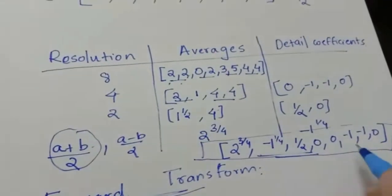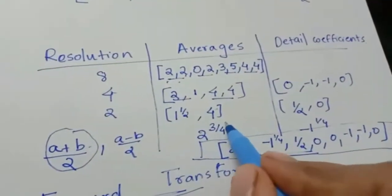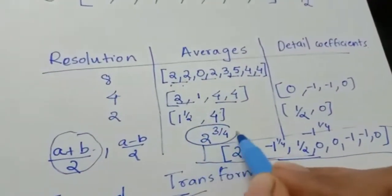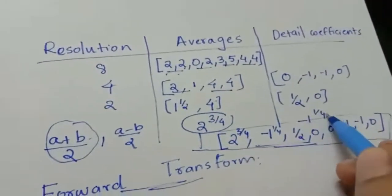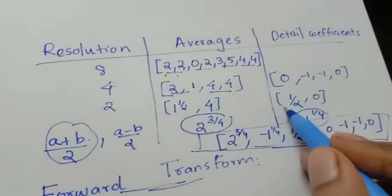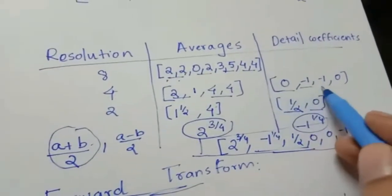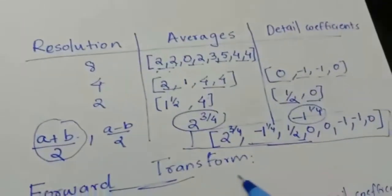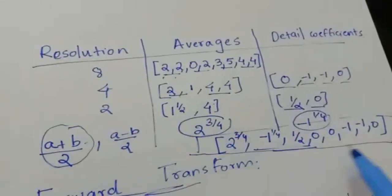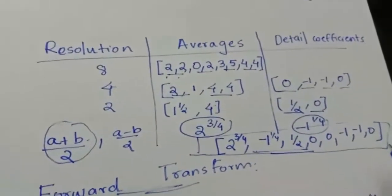How did we get this resultant vector? We wrote the final average value first, then the detail coefficients level by level — from coarsest to finest — and in that way we formed the resultant reduced vector.